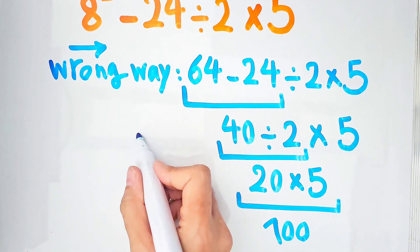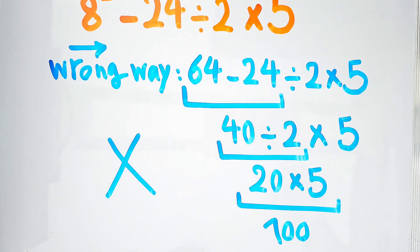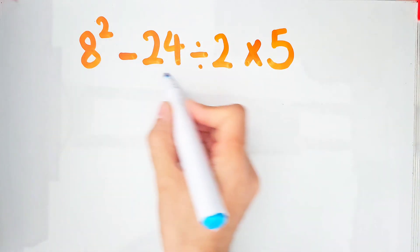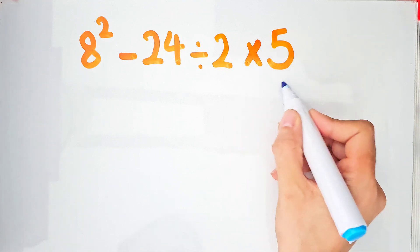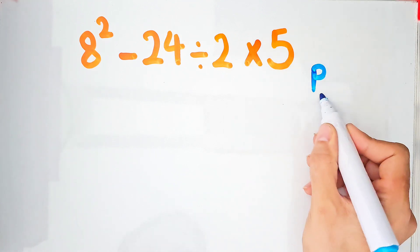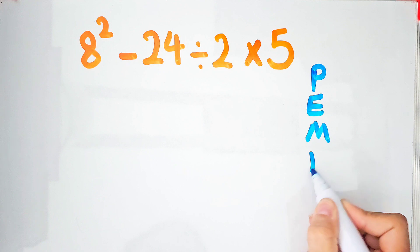To solve this question correctly we need to follow a rule that's called PEMDAS. PEMDAS shows the order of operations and the priority of the mathematical operations: Parentheses, Exponent, Multiplication, Division, Addition and Subtraction. According to this rule first we simplify the exponent.